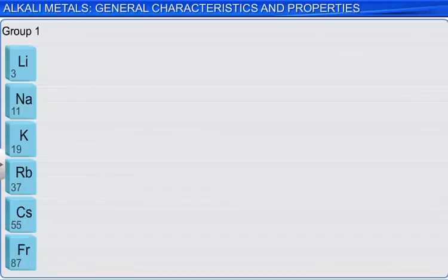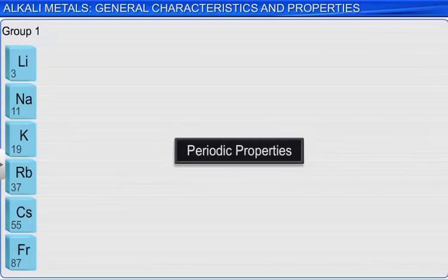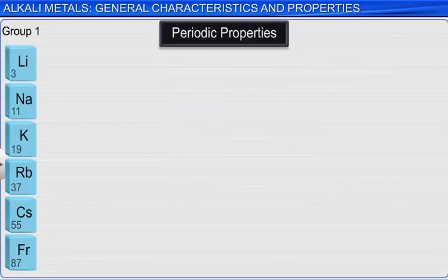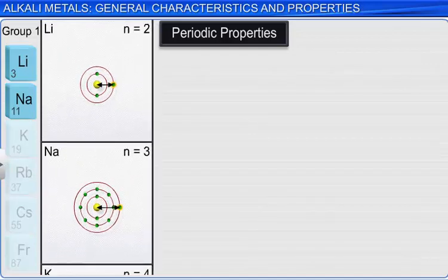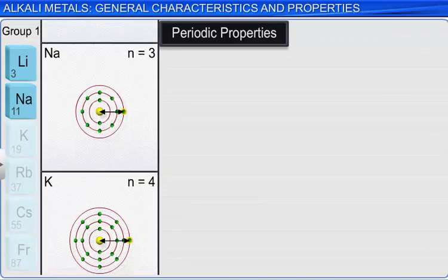Let's review some periodic properties as they relate to alkali metals. As you consider the group 1 elements from top to bottom, atomic radius increases. This can be explained because as you move down the group, there is an increase in the number of shells, and therefore the atomic radii increases.